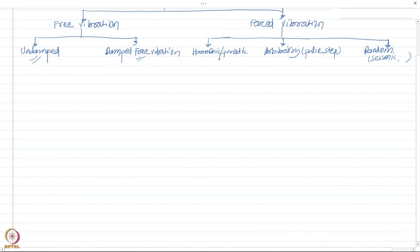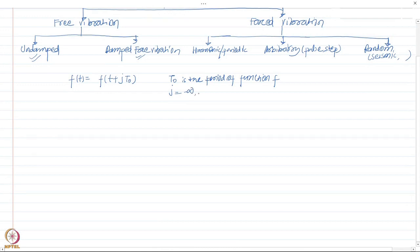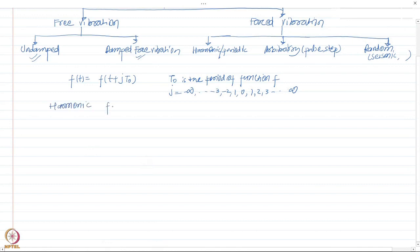Any excitation can be characterized as periodic if f(t) = f(t + j·T₀), where T₀ is the period of the function f and j is an integer ranging from minus infinity to plus infinity — that is, values like minus three, minus two, minus one, zero, one, two, three, and so on. If a function can be written like this, it is characterized as a periodic function.